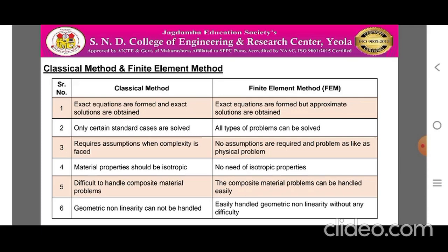Point two: in case of Classical Method, only certain standard cases of problems are solved, while in case of Finite Element Method, all types of physical problems can be solved. Point three: Classical Method requires certain assumptions when complexity in the problems is faced. In case of Finite Element Method, no assumptions are required and the problem is taken as it is, just like the physical problem.